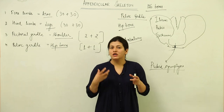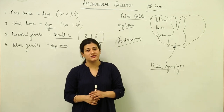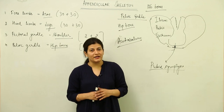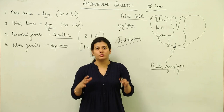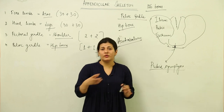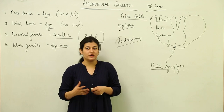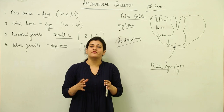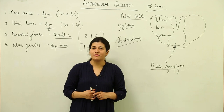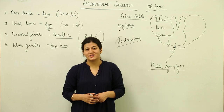That concludes our study of the appendicular skeleton — covering the limbs and the girdles, the bones present, and the cavities for articulation. For better learning, if a real skeleton is available in your school laboratory, try to memorize the names of each bone using it directly. Otherwise, diagrams will also be discussed to help reinforce your understanding.